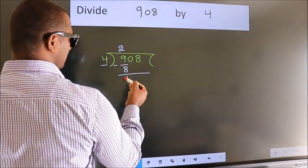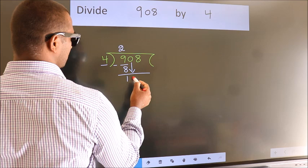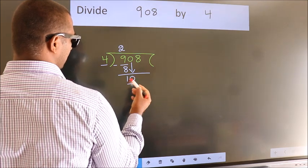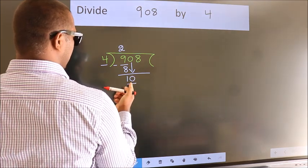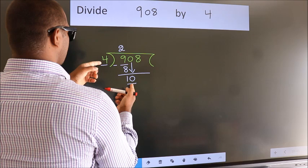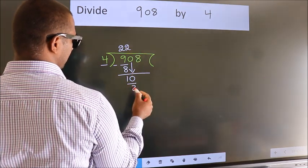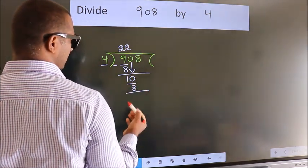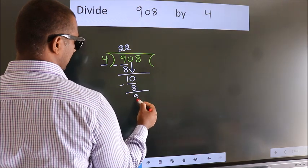After this, bring down the beside number. So, 0 down. So, 10. A number close to 10 in 4 table is 4 twos, 8. Now, we subtract. We get 2.